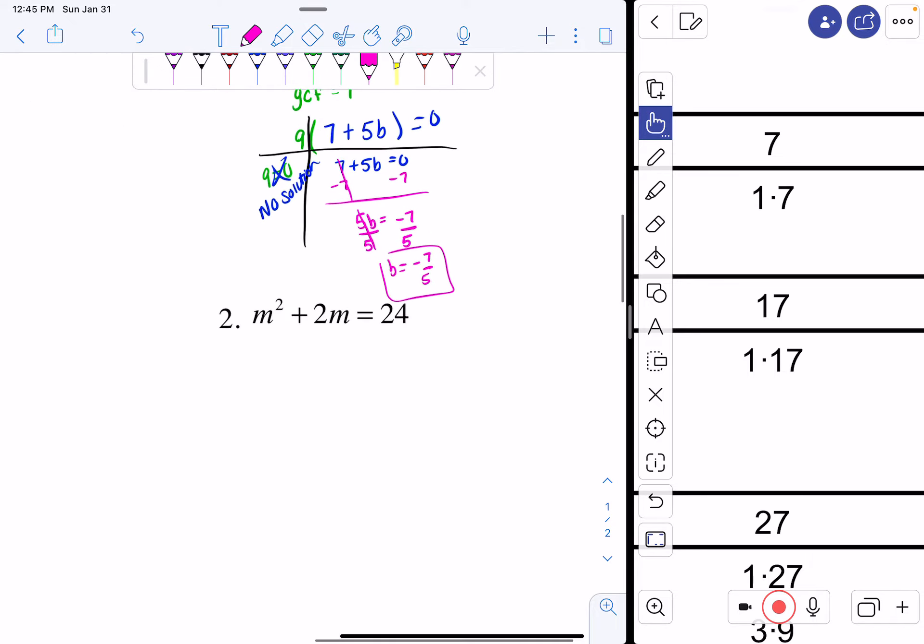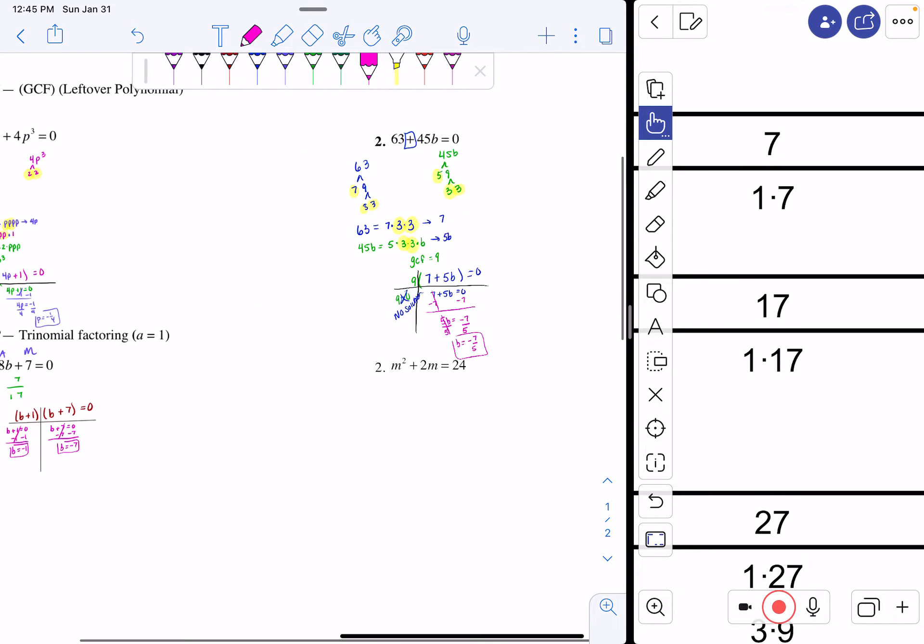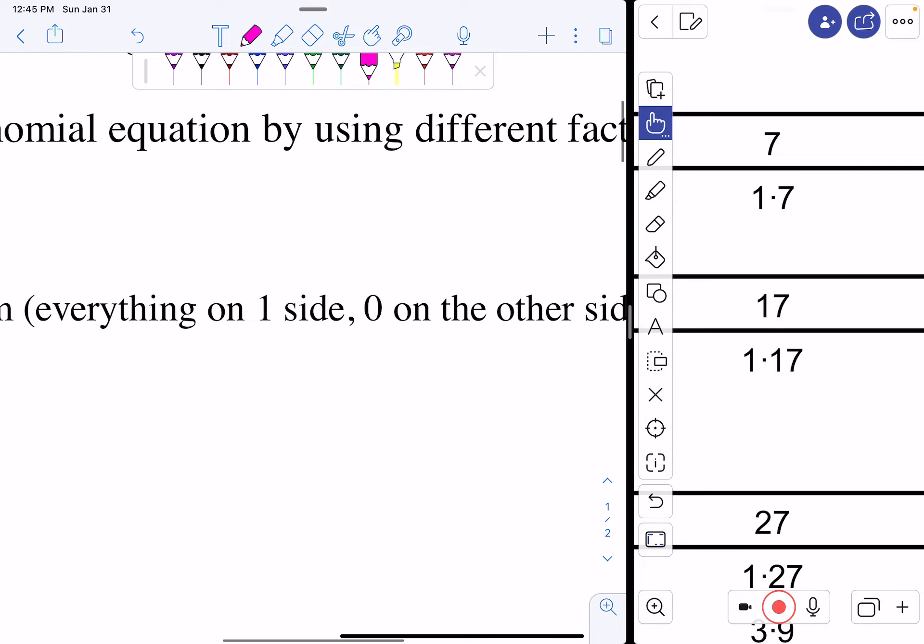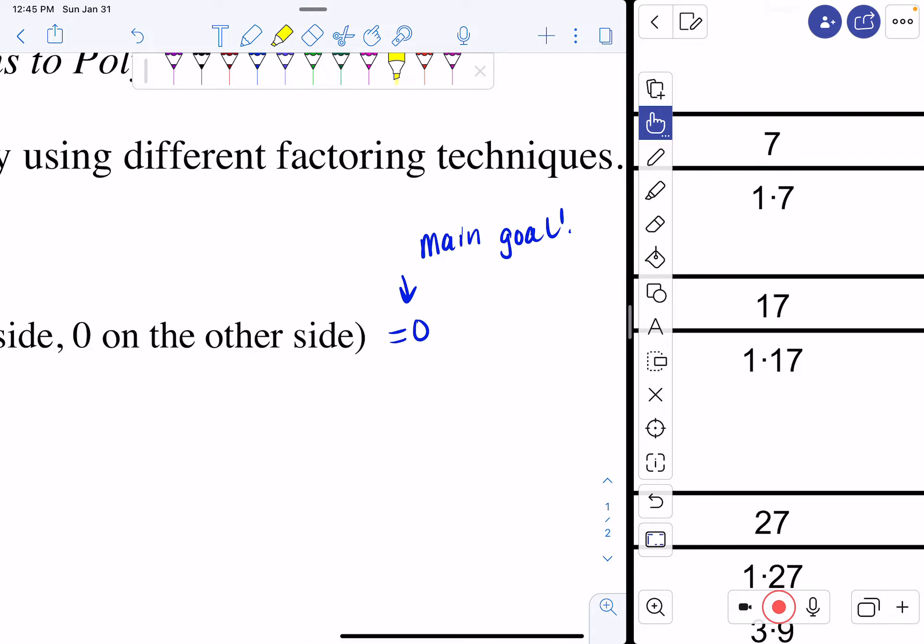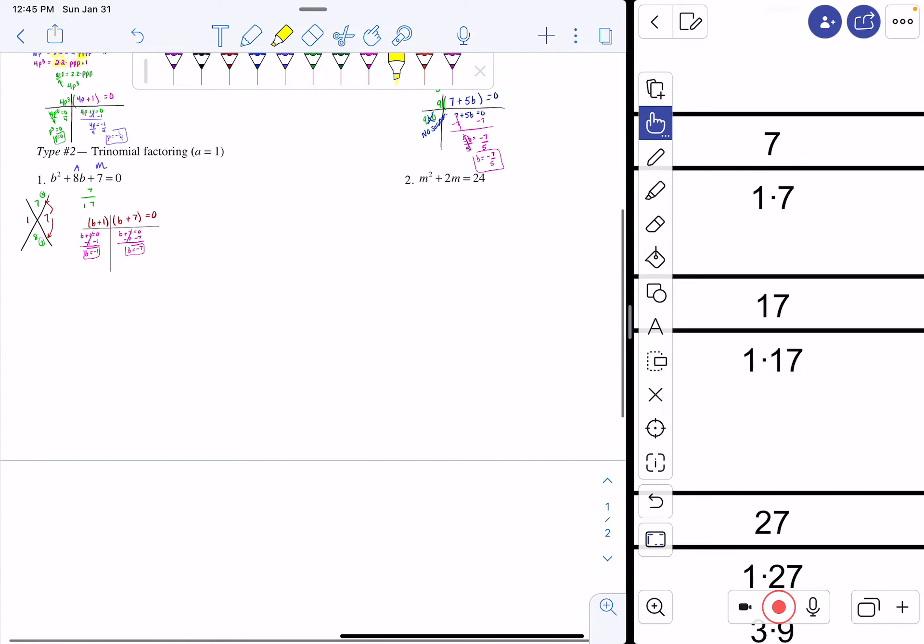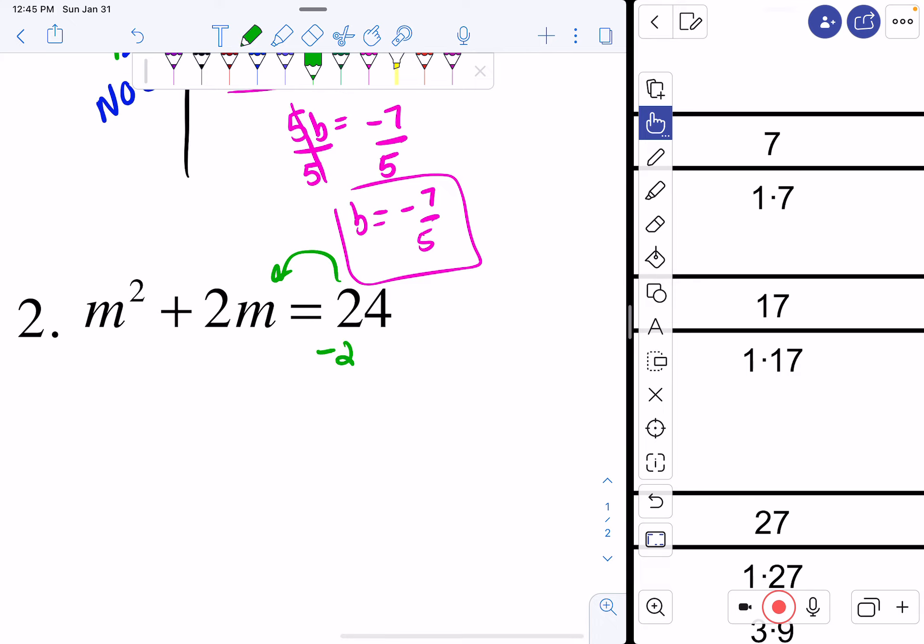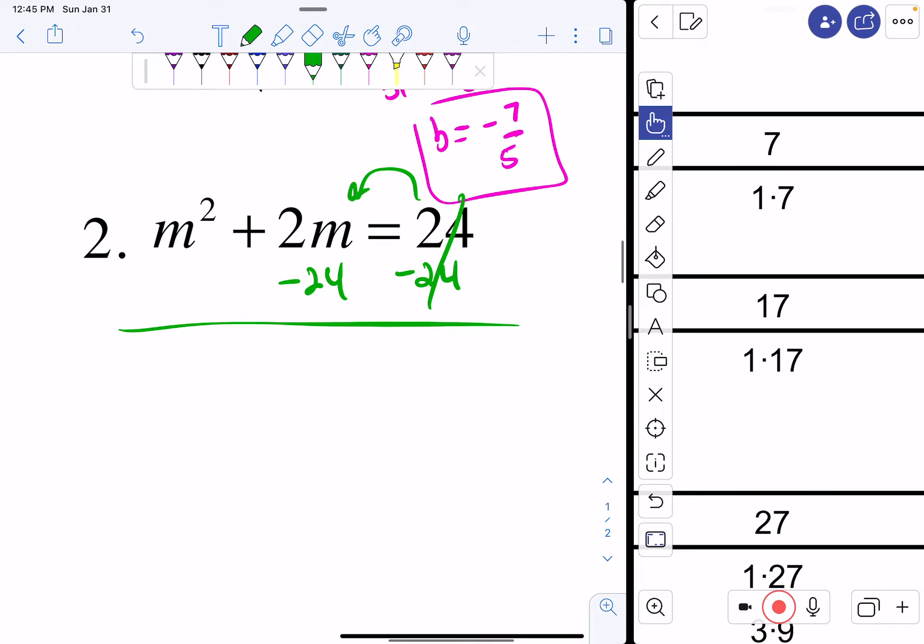Let's go on to our next example. If you look, this one's a little different because I have a 24 on the right-hand side. But here, we want it to be equal to 0. So what we have to do is we have to get this 24 to the left-hand side of our equation. So to do that, I'm going to subtract 24 from both sides of my equation. My 24 is canceled. And this 24 doesn't have a like term with anything. So I can actually just do m squared plus 2m minus 24 equal to 0.